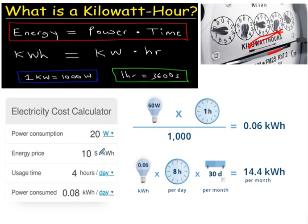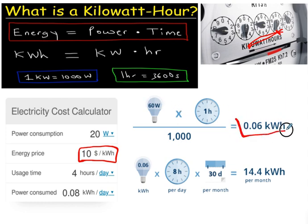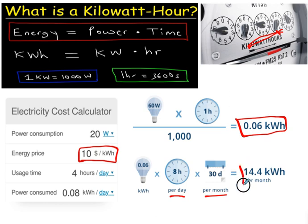You can find electricity cost calculators where you plug in these numbers. If you're spending $10 per kilowatt hour, you need to move away from that place. Look at this example: a 60-watt light bulb — convert that to kilowatts by dividing by 1,000, multiply by an hour — that's 0.06 kilowatt hours. If you leave that light on for eight hours a day for an entire month, it would drive 14.4 kilowatt hours per month.